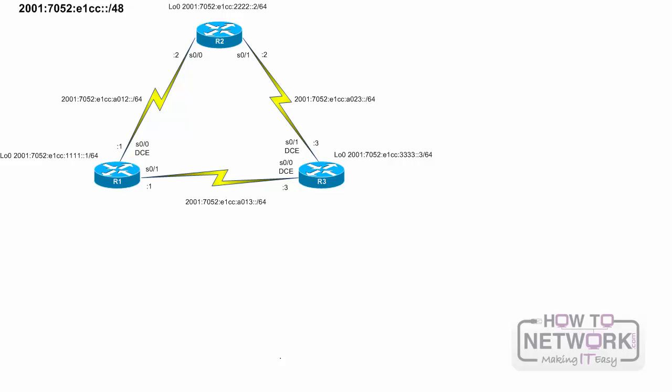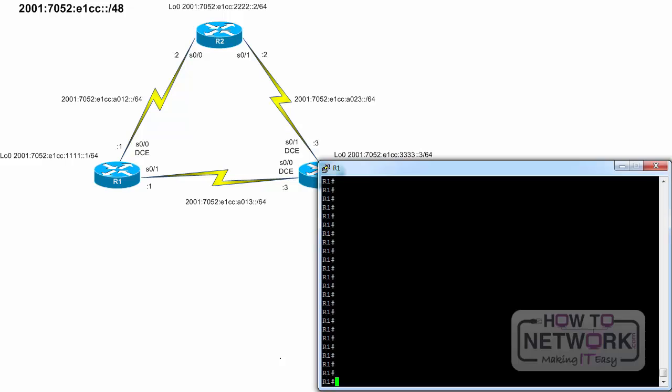The topology we are going to use in this lab exercise was already introduced in the previous lesson. Similar to IPv4, it is typically best practice to manually configure IPv6 addresses on router interfaces. First, we will configure the global unicast addresses on the links between the routers R1, R2, and R3.